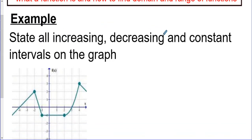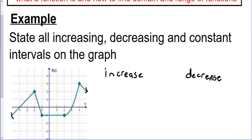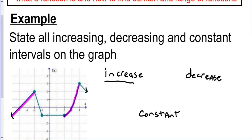Let's look at an example graph and state all intervals of increase, decrease, and constant. This graph continues with arrows in both directions, so it goes forever in both directions. Starting with increasing sections: if I look at the graph, I can see it's going uphill here. There's also another section that starts low and increases — going uphill as well.